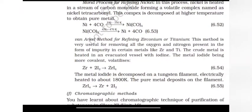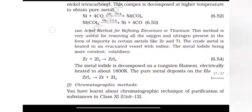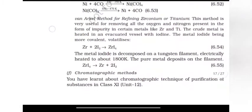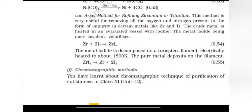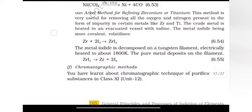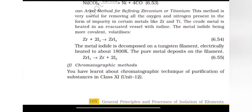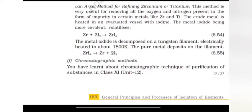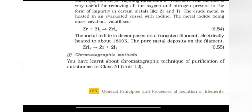Van Arkel method for refining zirconium or titanium. The method is very useful for removing all the oxygen and nitrogen present in the form of impurity in certain metals like zirconium or titanium. The crude metal is heated in an evacuated vessel with iodine. The metal iodide formed, being more covalent, volatilizes. ZrI4 plus 2I2 gives ZrI4. The metal iodide is decomposed on a tungsten filament electrically heated to about 1800 Kelvin. The pure metal deposits on the filament.